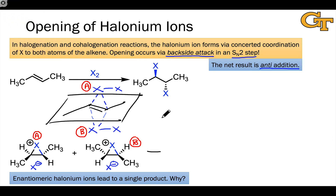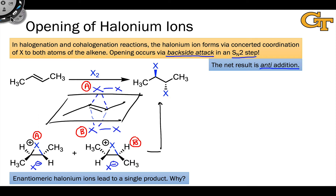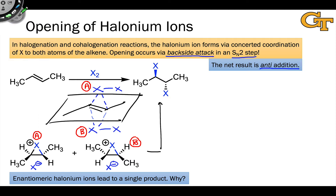We've got a pair of enantiomeric halonium ions that collectively lead to a single product, and this is not a mistake — this reaction only forms a single product. We can use the idea of stereotopic relationships to understand why this happens, and in particular focus our attention on the stereotopic relationship between the carbons that would be attacked by X- to form the product in each of these halonium ions.